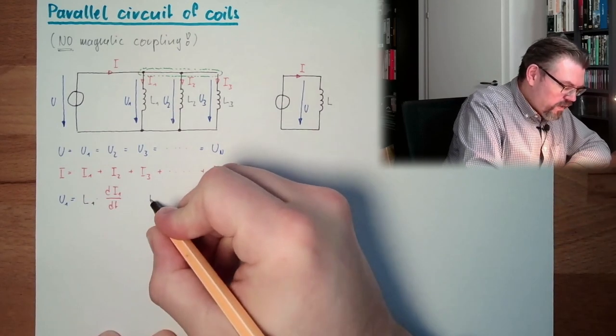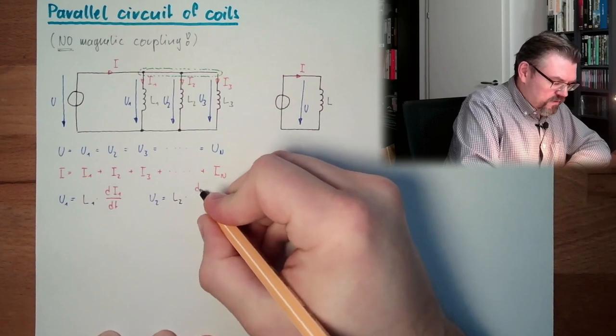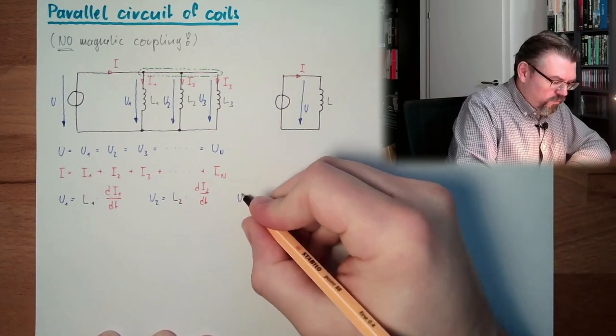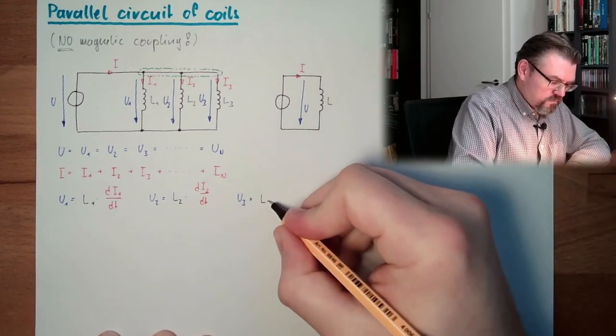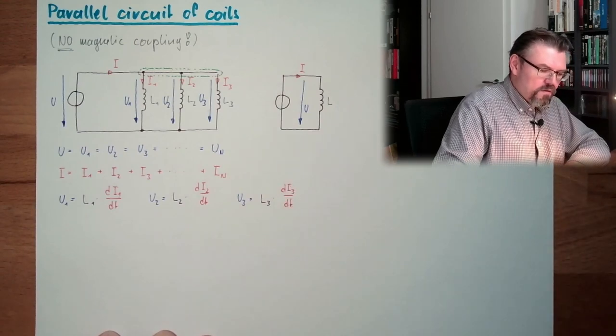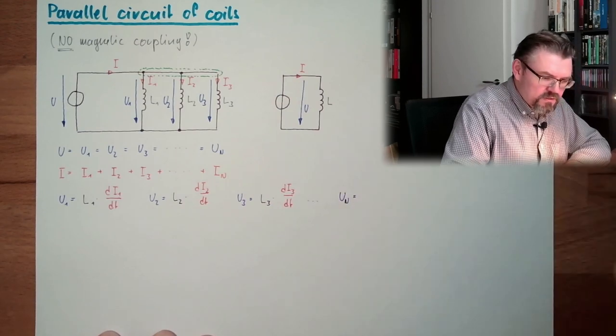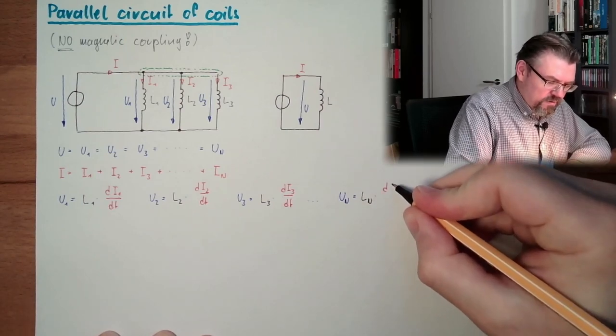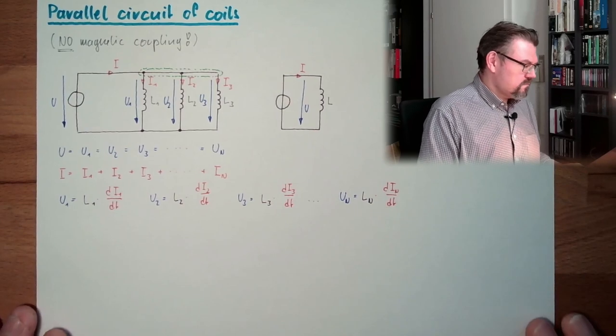So my U2 equals L2 multiplied dI2 dt. My U3 equals L3 multiplied dI3 dt, and so on. And my UN equals Ln multiplied dIN dt.